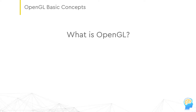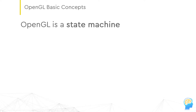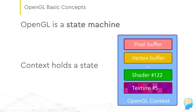You talk to the system by calling its functions and setting up its state to run the rendering. OpenGL is a state machine, meaning it has an internal memory state called the context. The OpenGL context keeps current global settings, like rendering options that can be enabled or disabled.